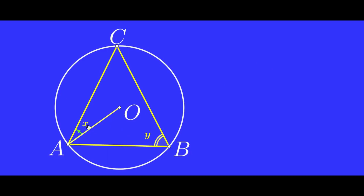Here, AC equals 90 degrees. x plus y sum of 990 — that's why we use a triangle. Let's take triangle AOC.